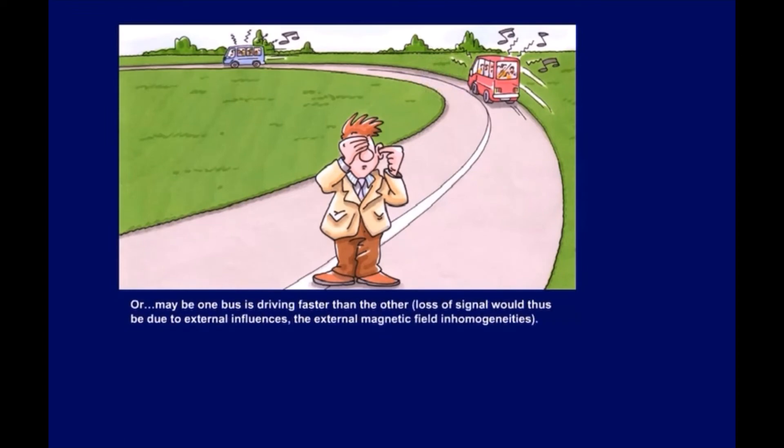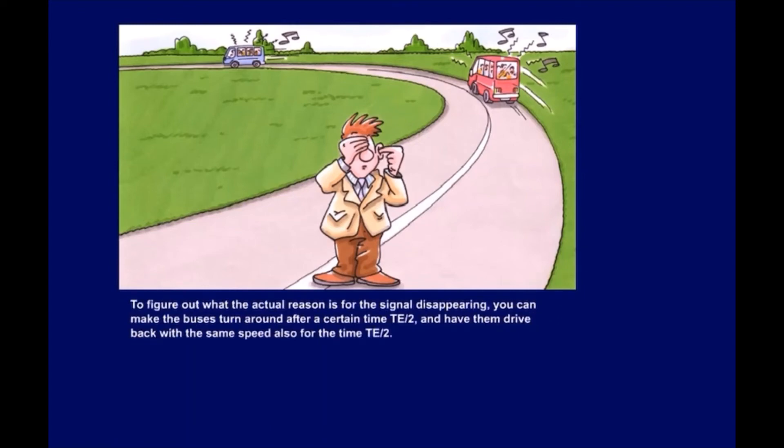Or, maybe one bus is driving faster than the other. Loss of signal would thus be due to external influences, the external magnetic field inhomogeneities. To figure out what the actual reason is for the signal disappearing, you can make the buses turn around after a certain time, half of TE, and have them drive back with the same speed also for the time half of TE.